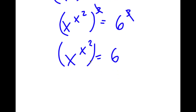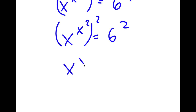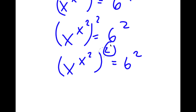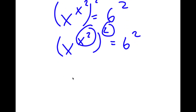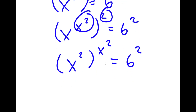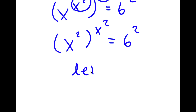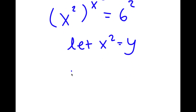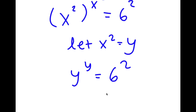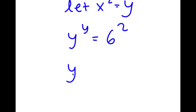Now I'm going to take the power of 2 on both sides. So now I have x to the power of x squared to the power of 2 is equal to 6 squared. And I'm going to switch these two places, so now I have x squared to the power of x squared is equal to 6 squared. And now I can let x squared equal to the variable y. So now I have y to the power of y is equal to 6 squared, which is 36.